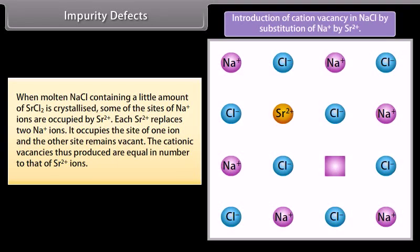Impurity defects: When molten NaCl containing a little amount of SrCl2 is crystallized, some of the sites of Na+ ions are occupied by Sr2+ depicted in the figure below. Each Sr2+ replaces two Na+ ions. It occupies the site of one ion and the other site remains vacant. The cationic vacancies thus produced are equal in number to that of Sr2+ ions.